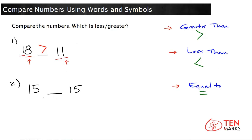Here, compare fifteen and fifteen. Look at the tens place. Both numbers have a one in the tens place, so now you need to compare the ones place. Both numbers have a five in the ones place, so since both numbers have the same amount of tens and the same amount of ones, these two numbers are equal.